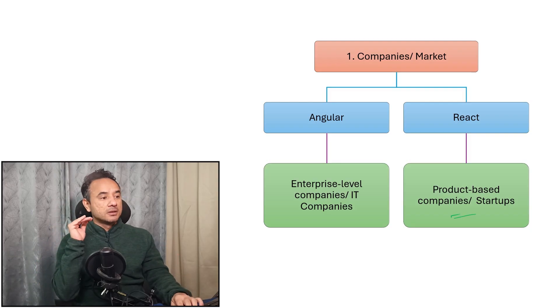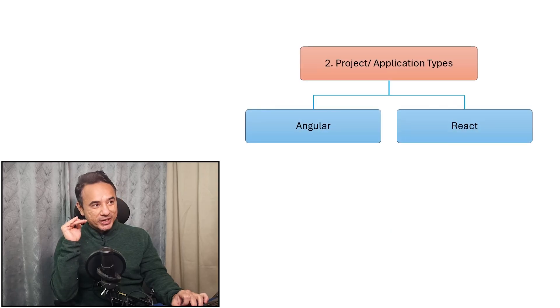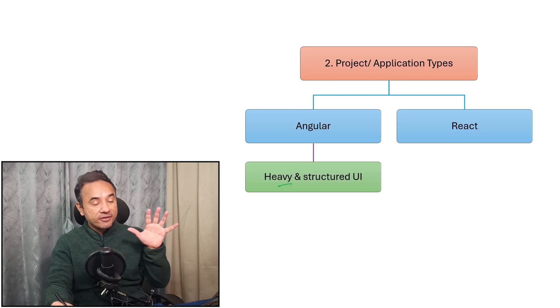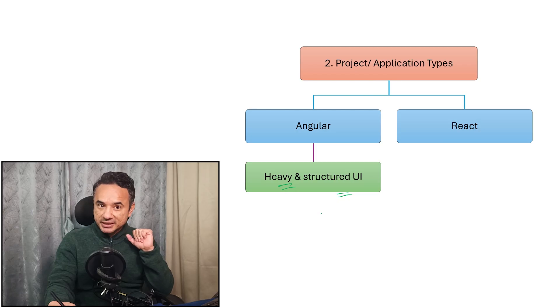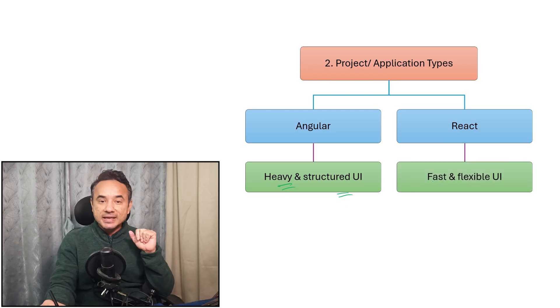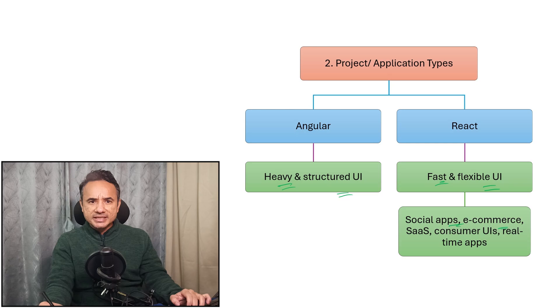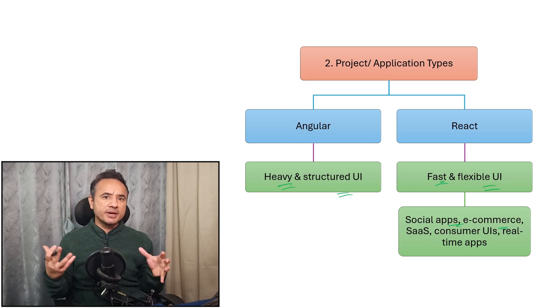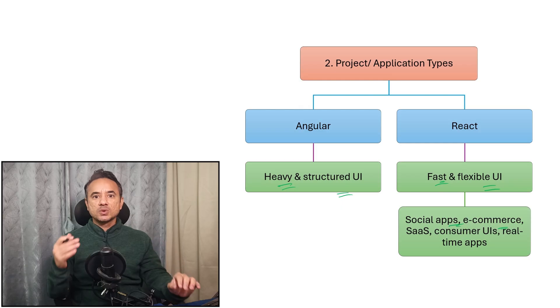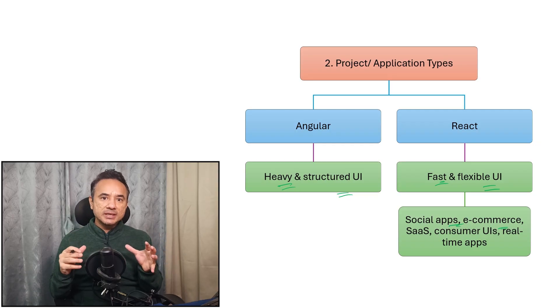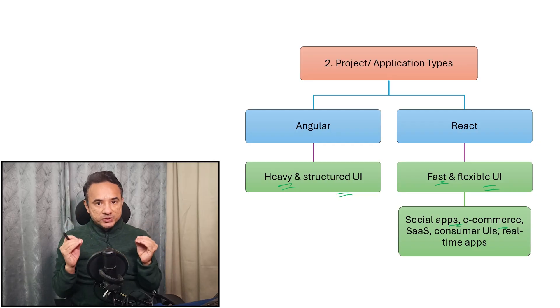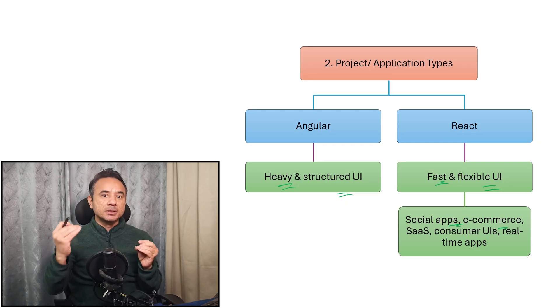The second difference between them is based on projects and application types. Angular is perfect for creating heavy and structured UI-based applications. And React is ideal for fast and flexible UI, for example social apps, e-commerce app front-ends, SaaS products, consumer apps, landing pages. React is good in them because React is considered fast.